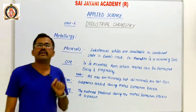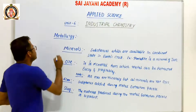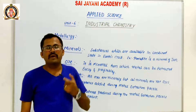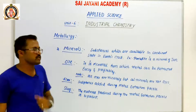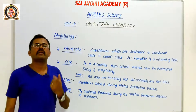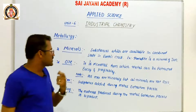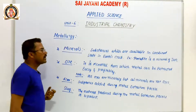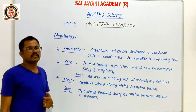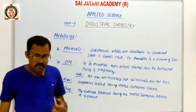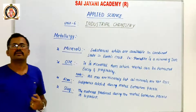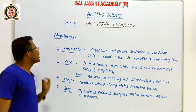So these are all the important definitions regarding metallurgy. First: minerals — substances which are available in combined state in the earth's crust. Ores — type of minerals from which metal can be extracted. Flux — a substance added during the chemical metal extraction process. Slag — the byproduct produced during the metal extraction process.